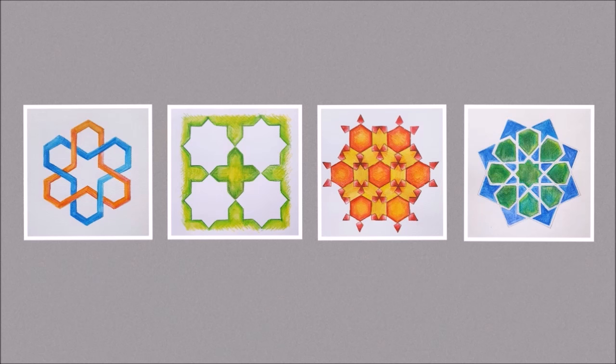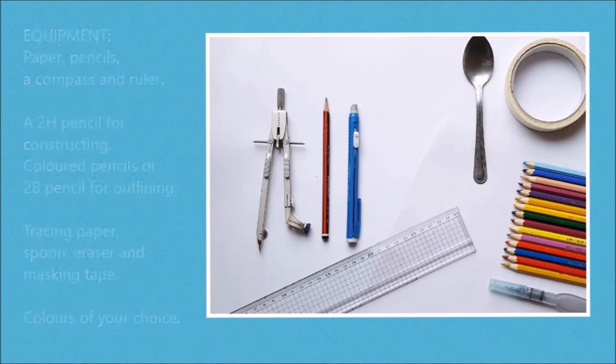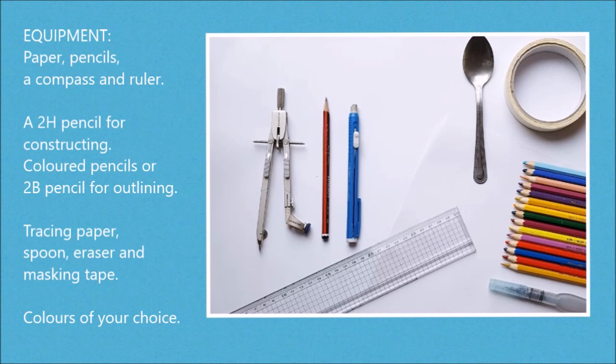To begin with you will need paper, pencils, a compass and a ruler. In particular, a 2H pencil for constructing, colored pencils or a 2B pencil for outlining, and to transfer the pattern, tracing paper, spoon, eraser and masking tape. Colors of your choice. I'll be using watercolor pencils and an aqua brush.